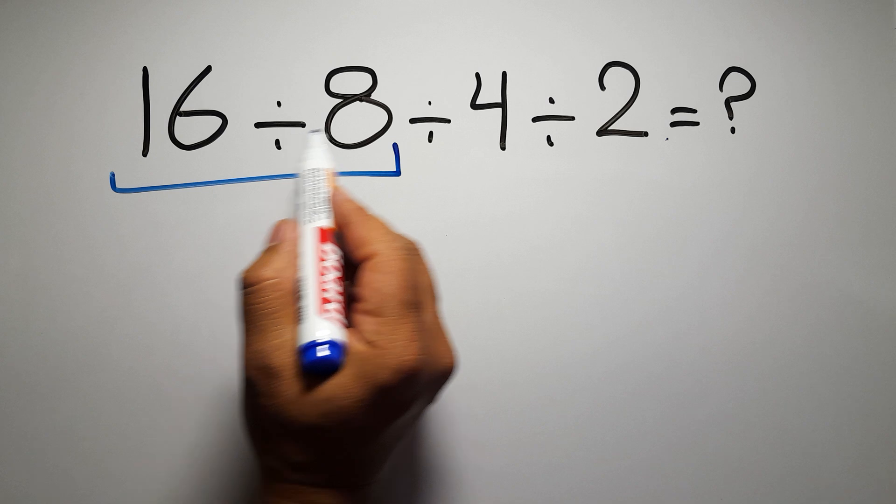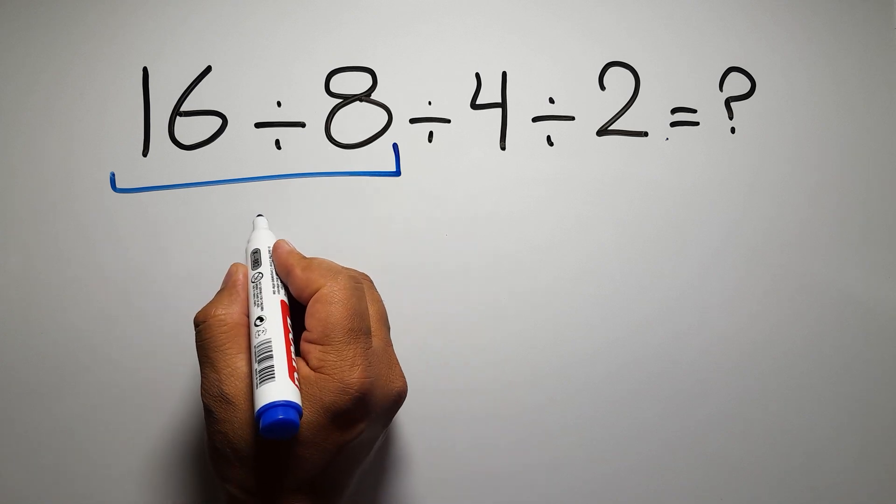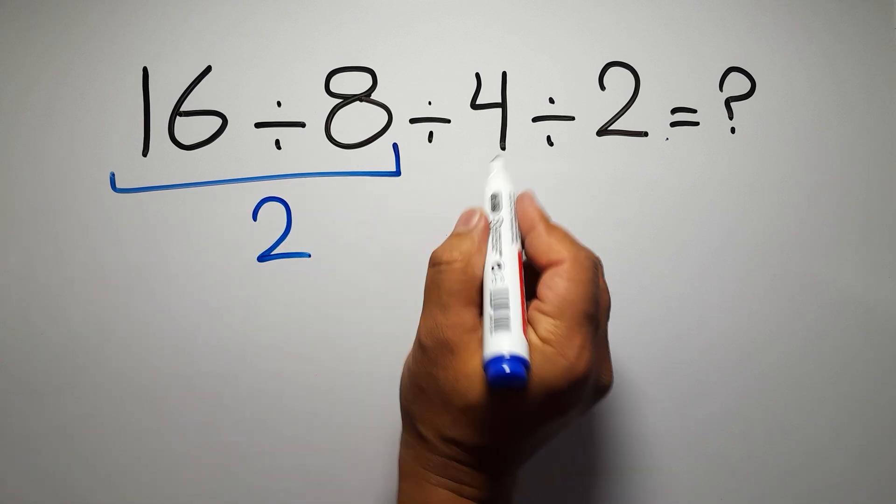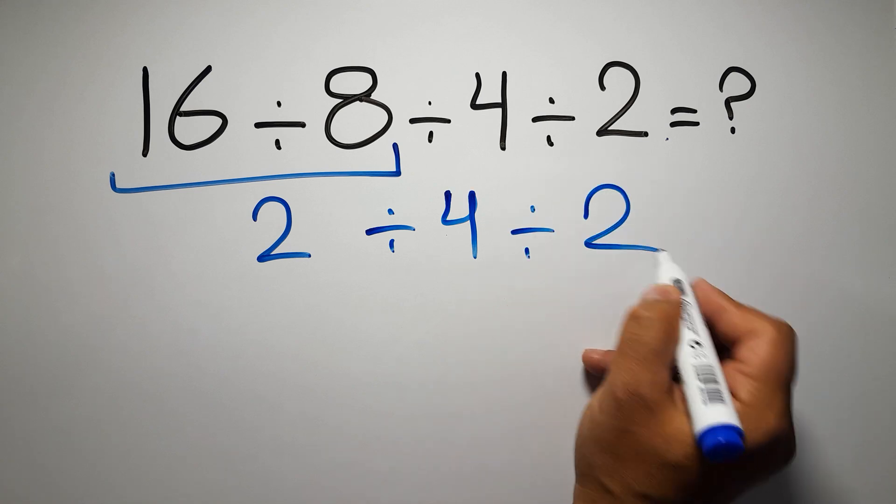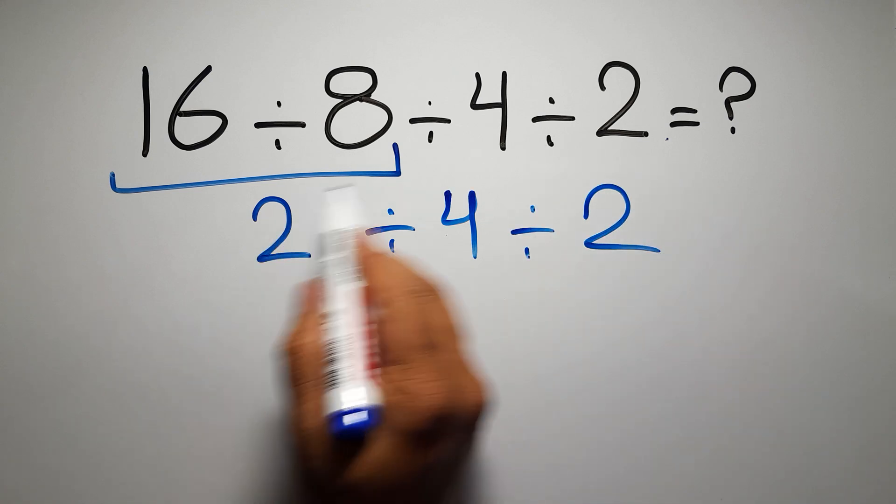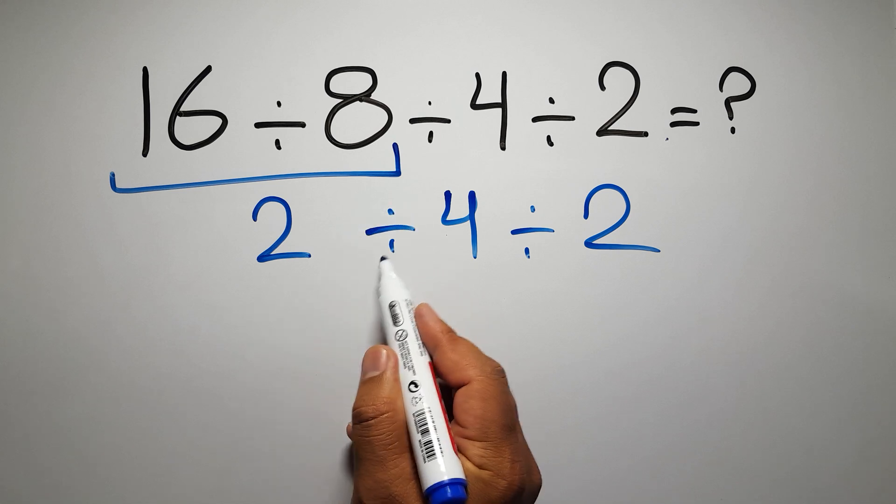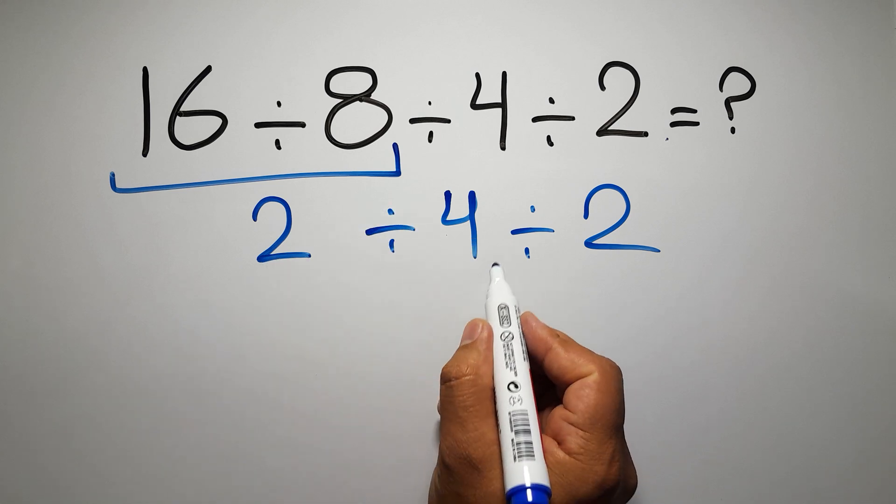So first, 16 divided by 8 which equals 2, so 2 divided by 4 and divided by 2. We have to work from left to right, so here first we have to do this division: 2 divided by 4.